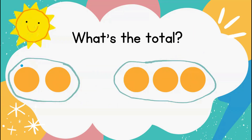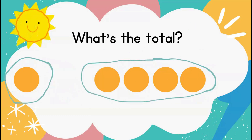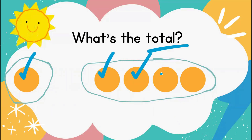Here we have a group of 2 and a group of 3, but we want to know the total. Let's count: 1, 2, 3, 4, 5. The total is 5 orange counters. Here I have a group of 1 and a group of 4 — I want to know the total. Let's count: 1, 2, 3, 4, 5. I have a total of 5 counters.